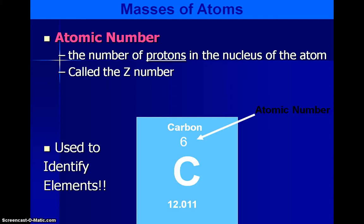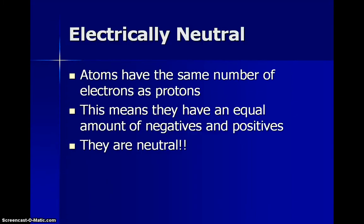If you have six protons, you're carbon. If you have two protons, you're helium. If you have three, you're lithium. So the number of protons or the atomic number determines what element you are. That number is also called the Z number.